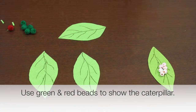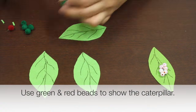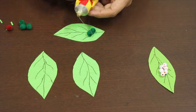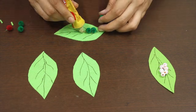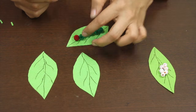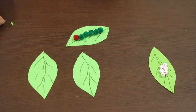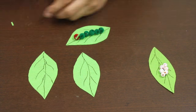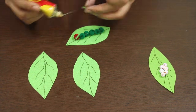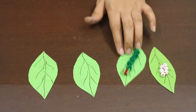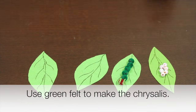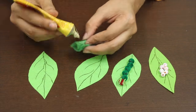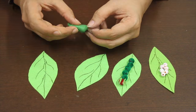The second stage: the eggs hatch to become a caterpillar after five days. To show this, use green and red beads to make a caterpillar. The third stage is the chrysalis — the caterpillar builds a cocoon around itself, known as the chrysalis.